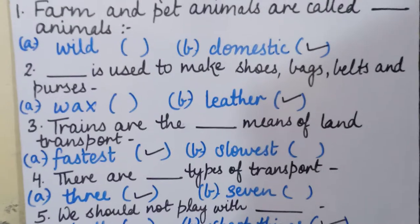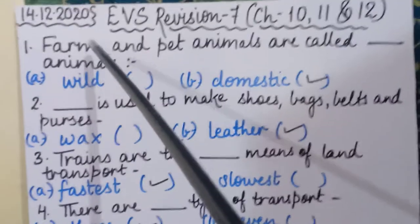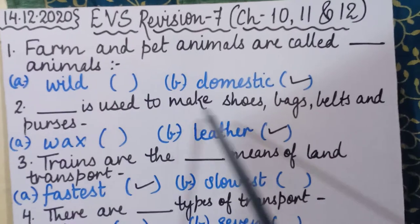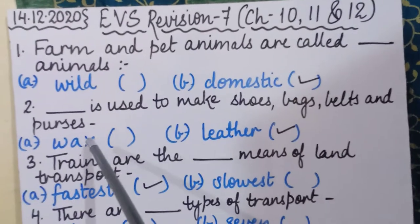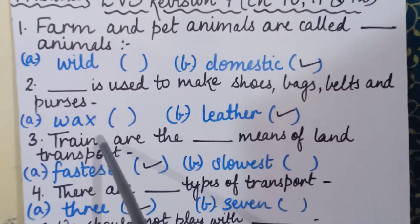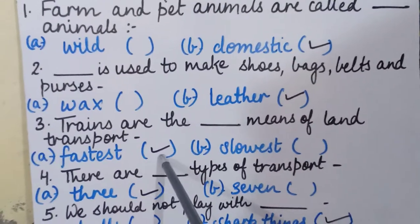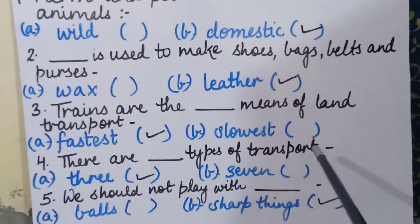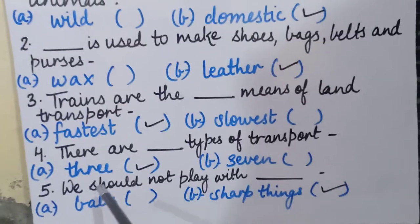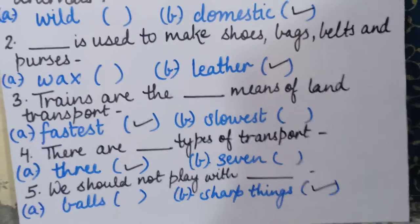Repeating questions one to five: Farm and pet animals are called domestic animals. ___ is used to make shoes, bags, belts, and purses — the correct answer is leather. Trains are the fastest means of land transport. There are three types of transport. We should not play with sharp things.